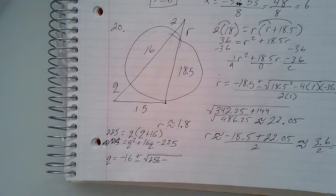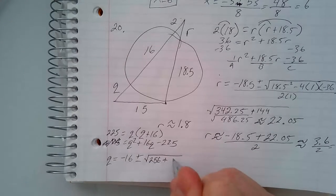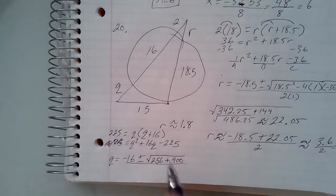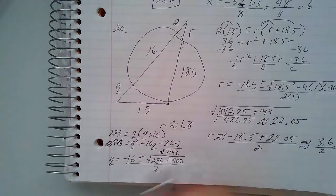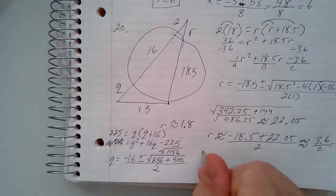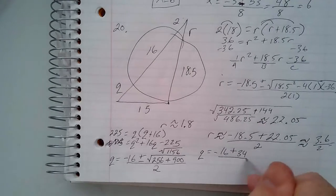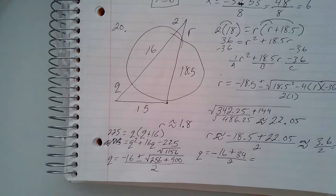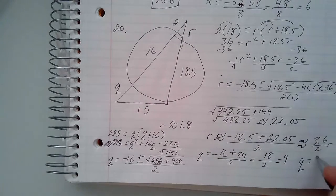Times negative 225 gives positive 900, so plus 900, all over 2a which is 2. 256 plus 900 gives 1156, and the square root of 1156 is 34. So q equals negative 16 plus 34 — we use plus because minus gives a negative — over 2. Negative 16 plus 34 is 18, divided by 2 gives 9. So q equals 9.